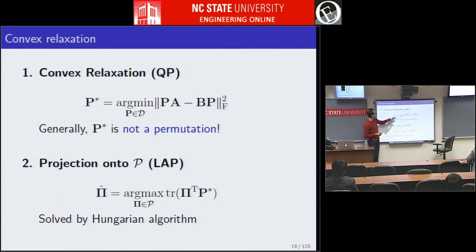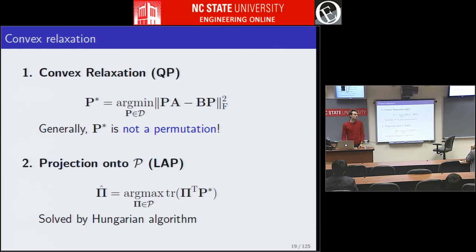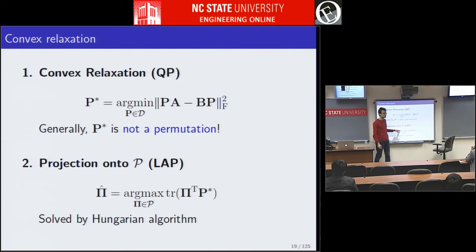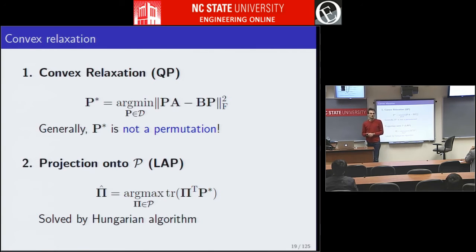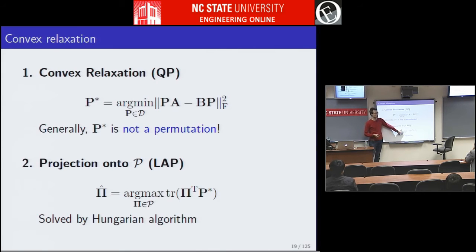The relaxation works like this: first solve the quadratic program, then do the projection. There are recent papers, like work by Francis Bach, that try to improve this projection step so that relaxation can be applicable to a wider class of problems. But there is no real theoretical understanding of when it will fail and when it will work. I will stick to this simple form of projection, noting that there are ways to do it better.